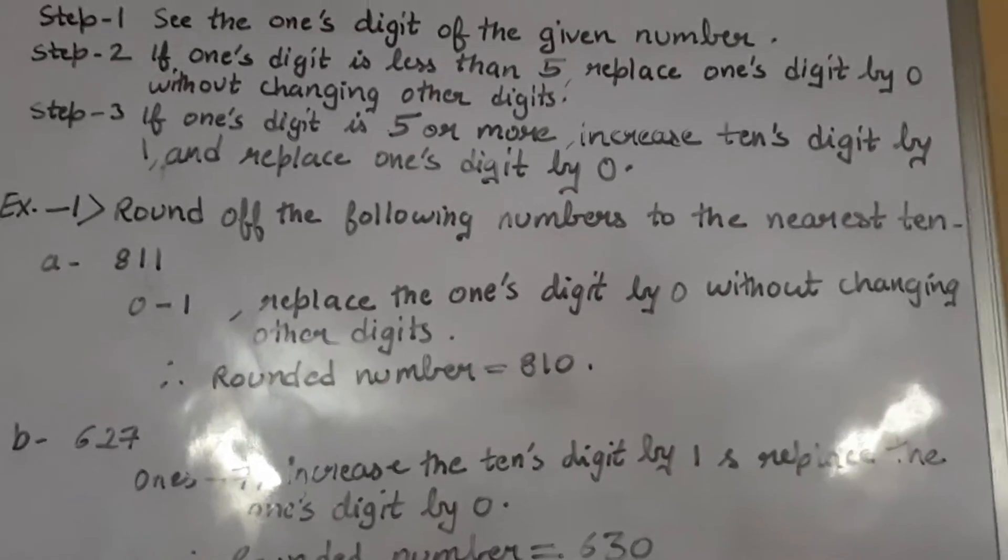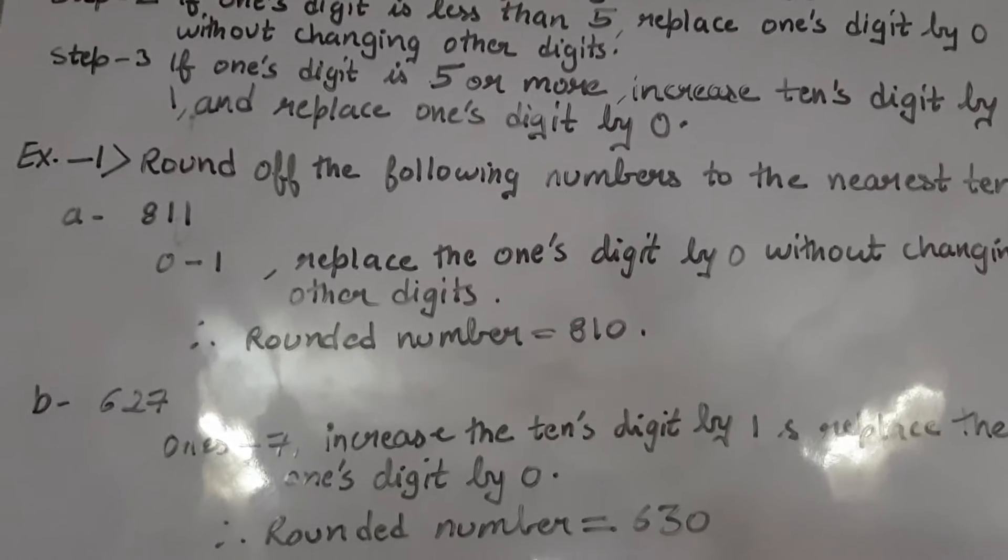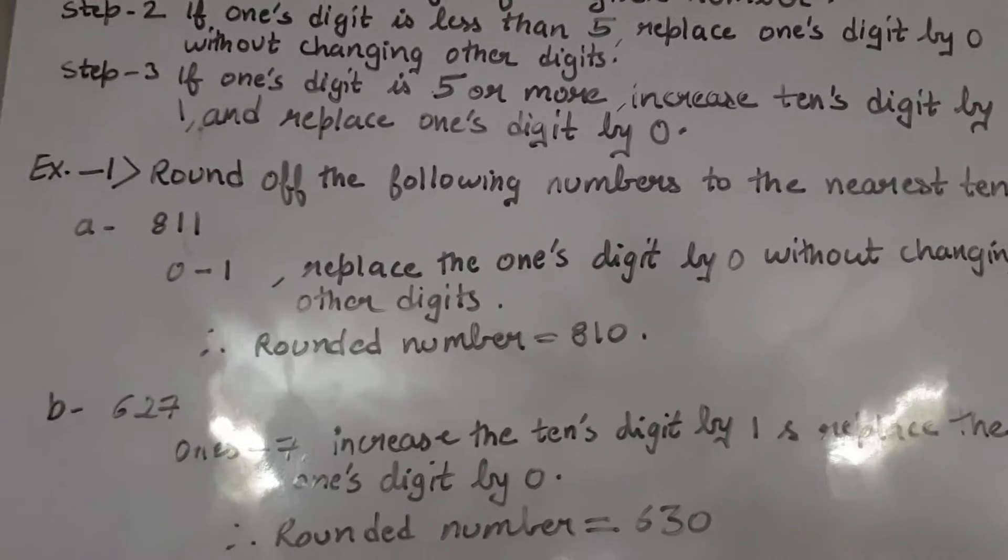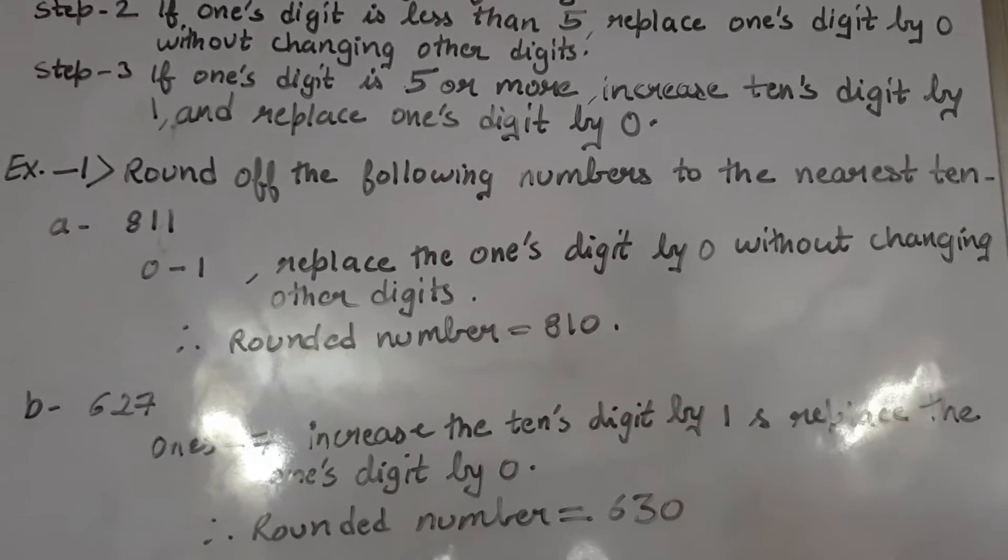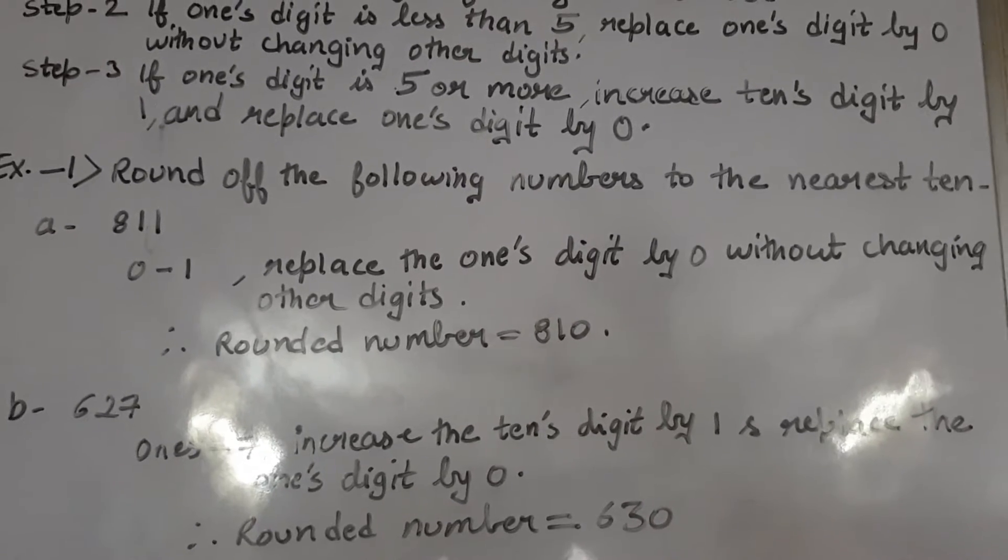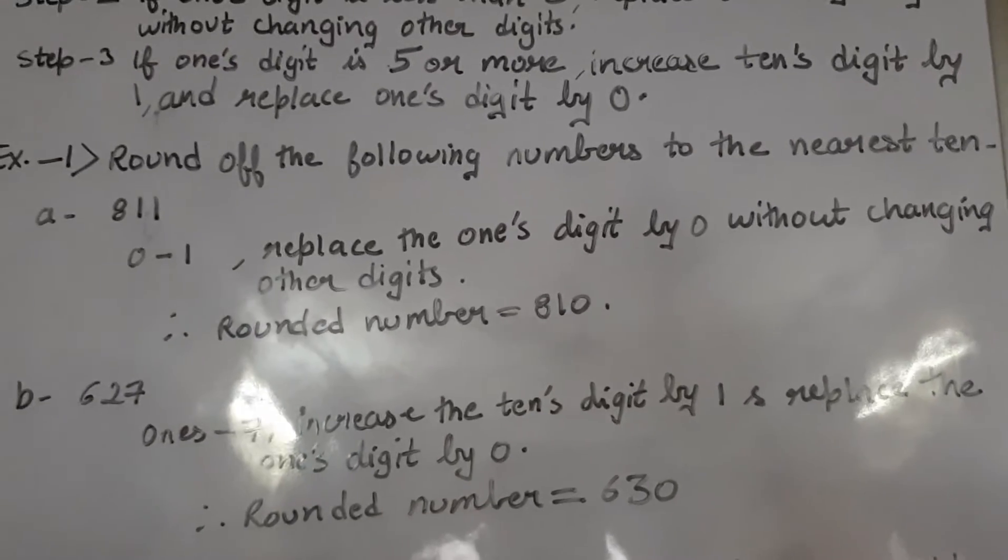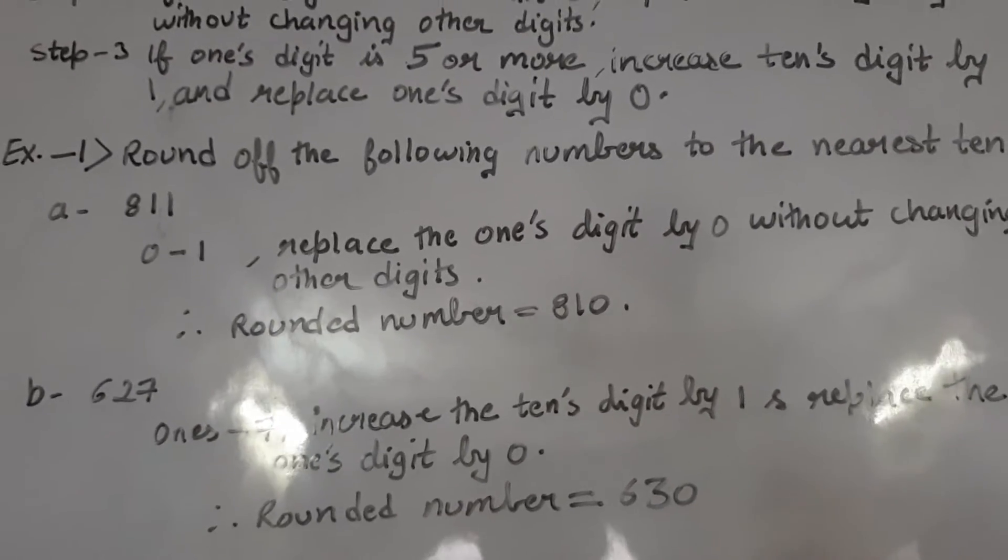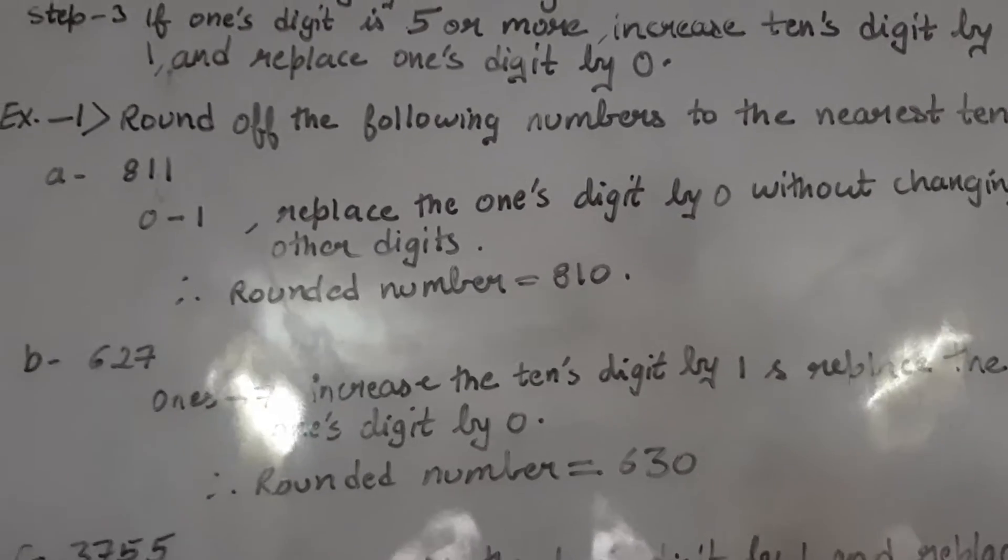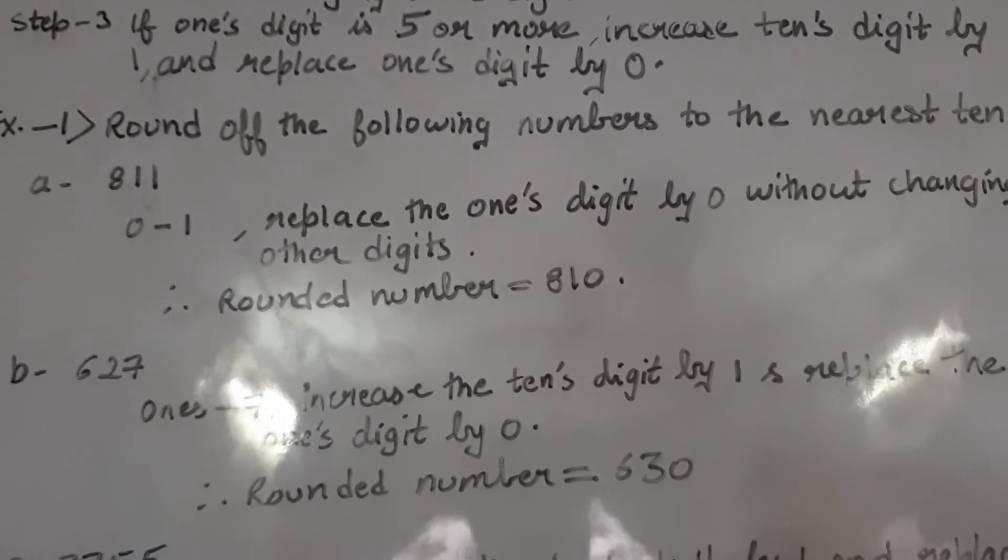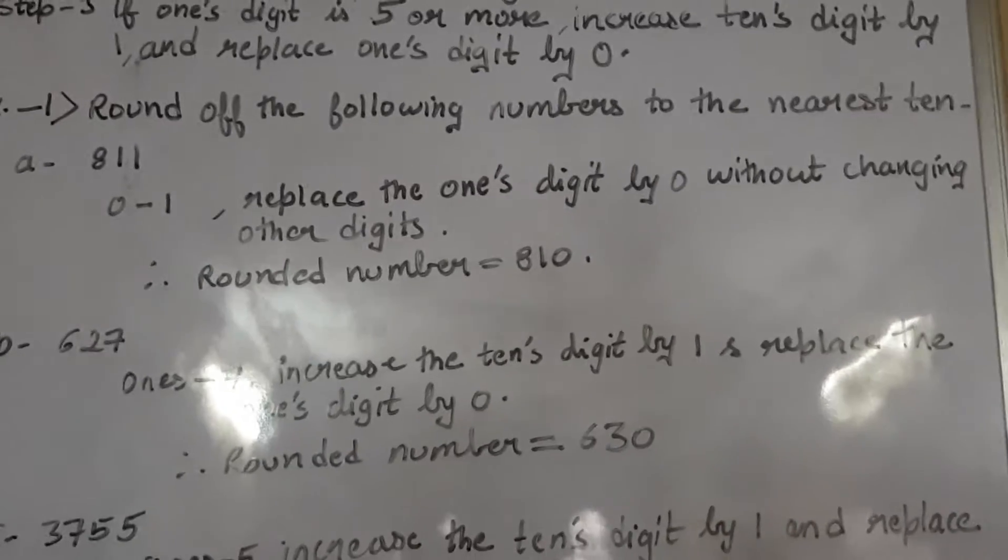And step 3 says: if 1's digit is 5 or more, increase 10's digit by 1 and replace 1's digit by 0. But if the number at 1's digit is 5 or more than 5, then increase 10's digit by 1. Means add 1 to the 10's place. Means whatever number is given at the 10's digit, always add 1 to them and replace 1's digit by 0. Now this I will explain you with the help of an example.